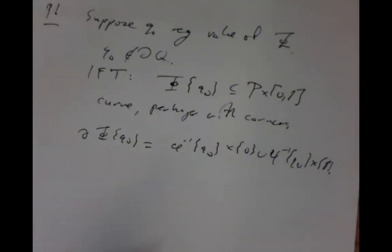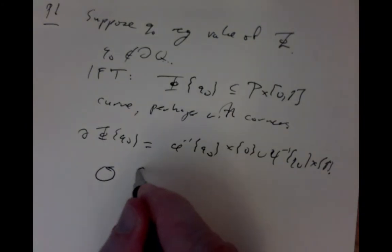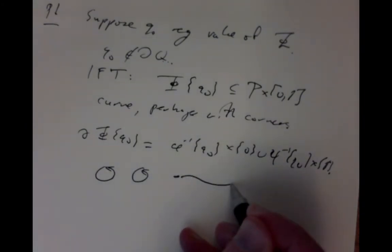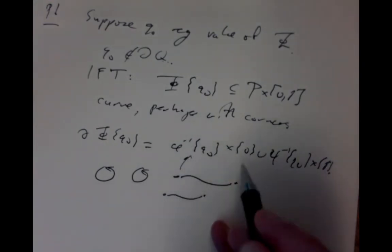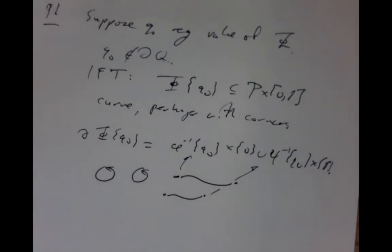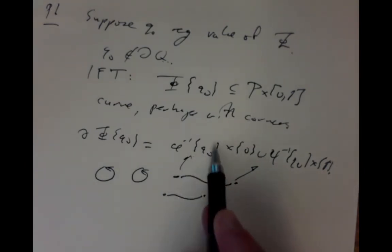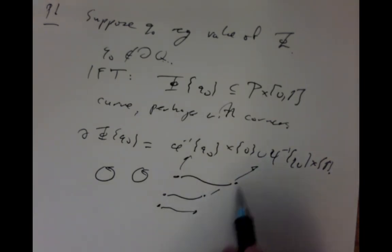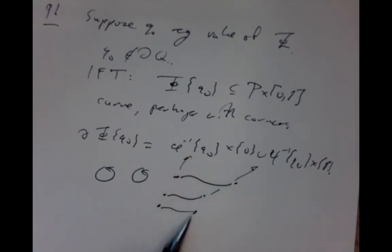The boundary of a compact curve is a finite set of points. The curve consists of finitely many circles and finitely many arcs diffeomorphic to intervals. Each arc has one end on the φ side (t = 0) and one end on the ψ side (t = 1), so the number of points on each side must be equal. Those counts are exactly the degrees, so the degrees match.